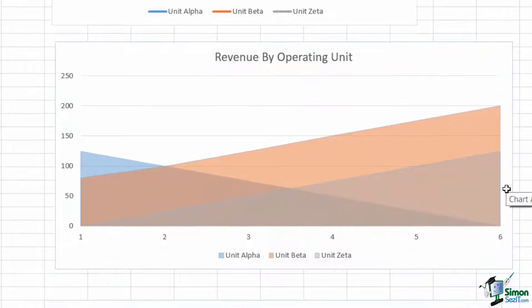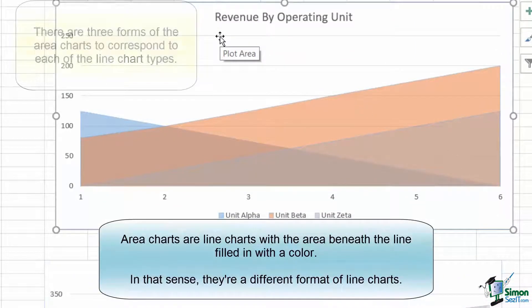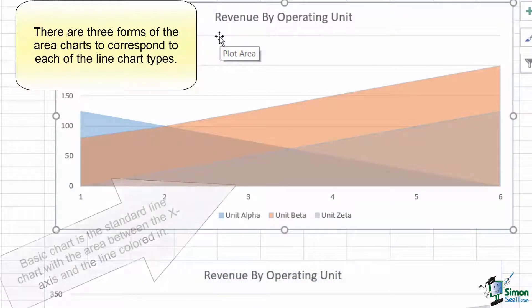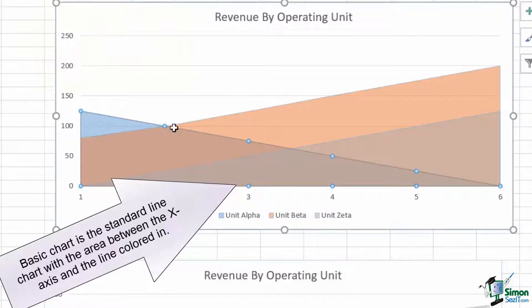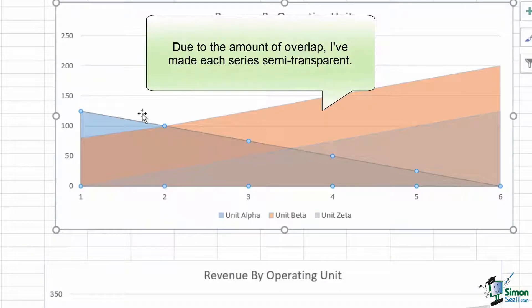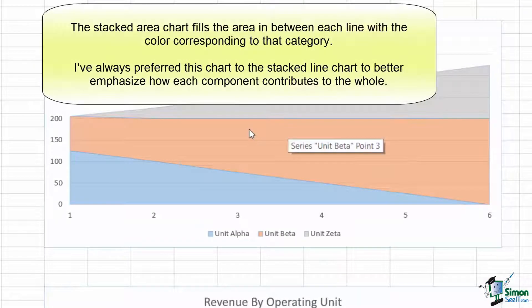Line charts can also be converted into area charts quite easily, and there are area charts representing each type of line chart. The basic area chart simply draws the line chart, and then fills the area in between the x-axis and the plotted line. For our dataset, that chart isn't usable without making most of the series semi-transparent, which I've done here. The stacked area chart is very similar to the stacked column chart, except on a continuous type of scale.